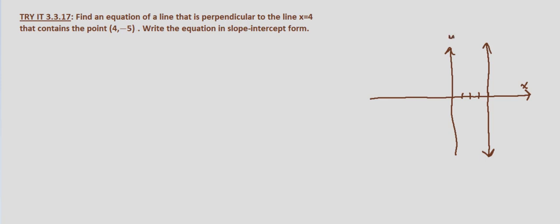And we want to know the equation of a line that is perpendicular to it that goes through the point (4, -5). So this is (4, -5).